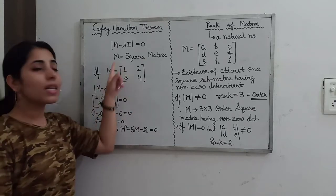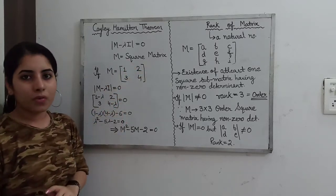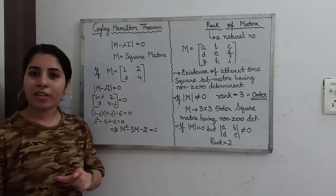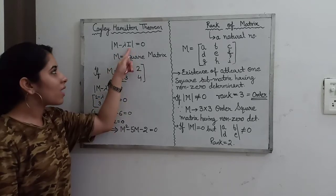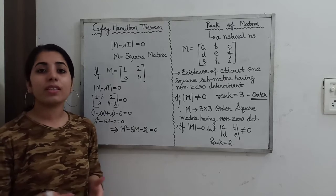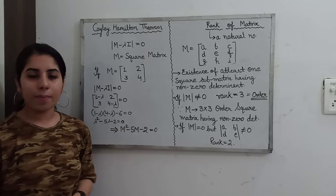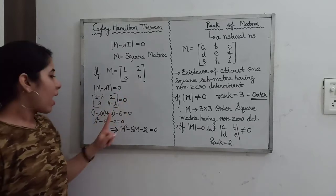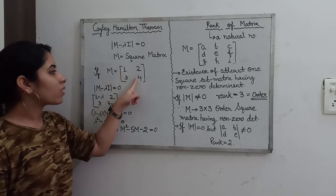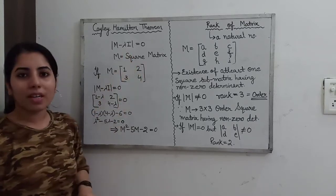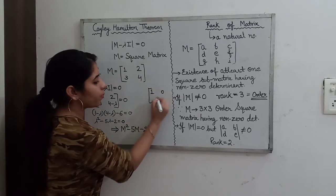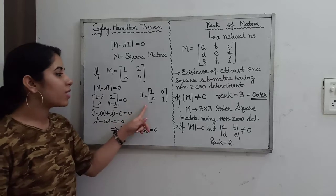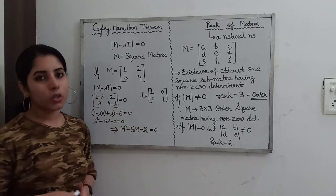Let's consider M as a square matrix. I have taken matrix M equal to [[1, 2], [3, 4]]. I want to find out the characteristic equation. Using the equation determinant of (M minus lambda I) equals zero, where I is the identity matrix and lambda represents the eigenvalues. Since M is a 2×2 order matrix, we use a 2×2 identity matrix. So M minus lambda I gives us the matrix with (1 minus lambda), 2, 3, (4 minus lambda), because only the principal diagonal elements of I are equal to 1.